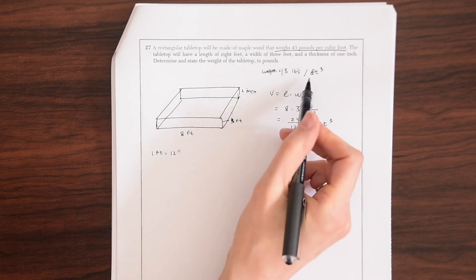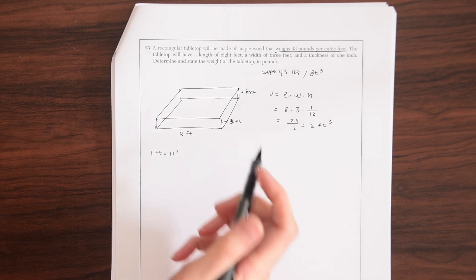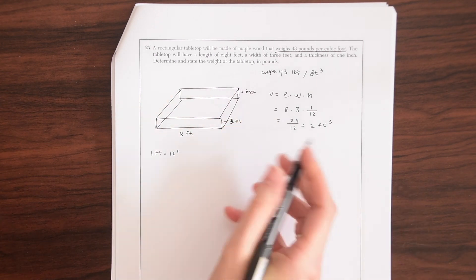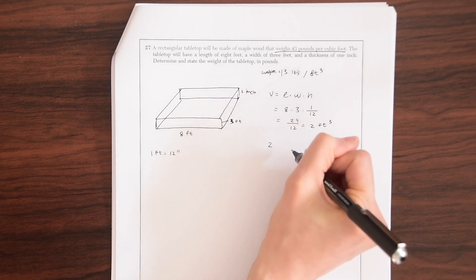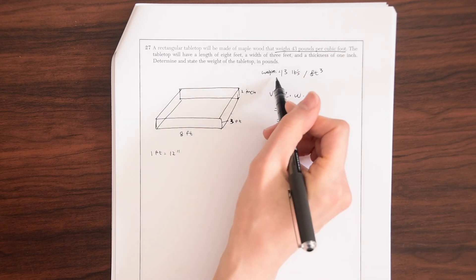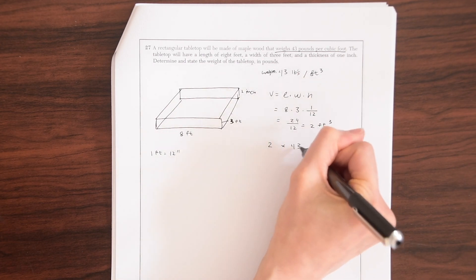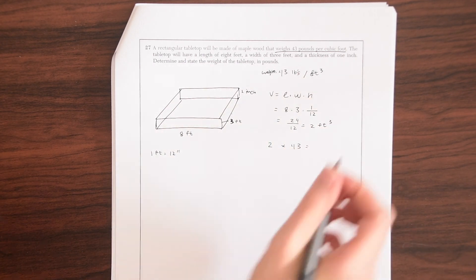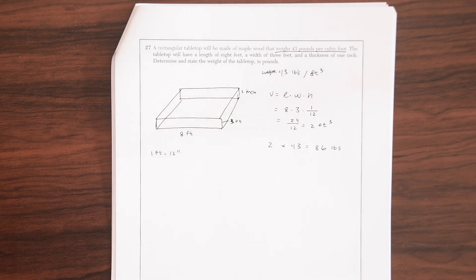So we have this in feet cubed, but we want to know the weight of the tabletop. So we're going to take 2 and then multiply it times that weight they gave us, times 43. So when we do that, we are going to get 86. And that's our answer.